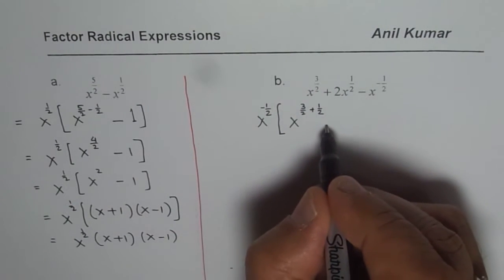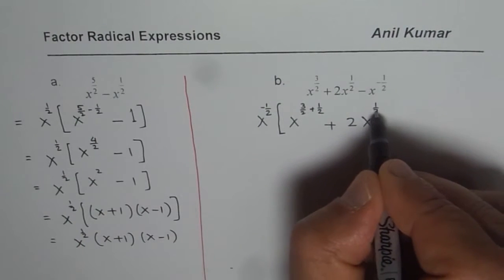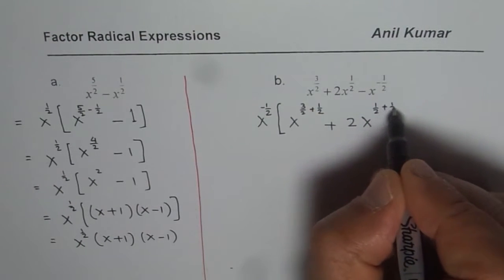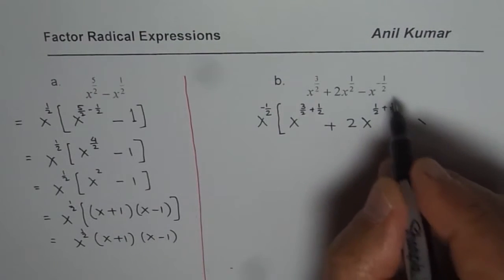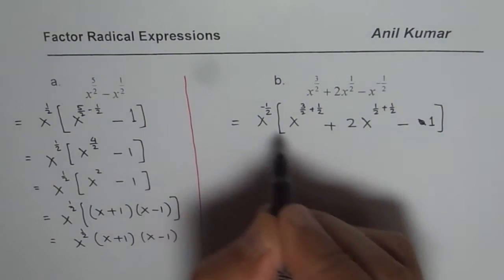Minus of minus. Now the second term will be 2x to the power of half minus minus makes it plus. Minus. We have already factored out this, so we have 1 here. So that is what you get.